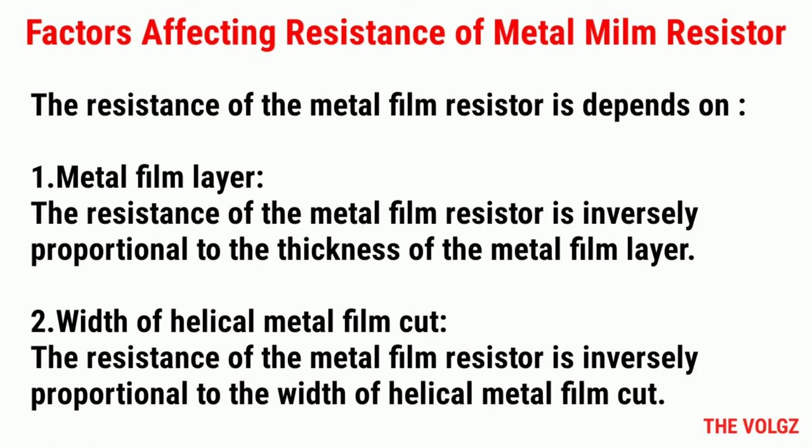Factors affecting resistance of metal film resistors. The resistance of the metal film resistor depends on: 1. Metal film layer — the resistance is inversely proportional to the thickness of the metal film layer. 2. Width of helical metal film cut — the resistance is inversely proportional to the width of the helical metal film cut.